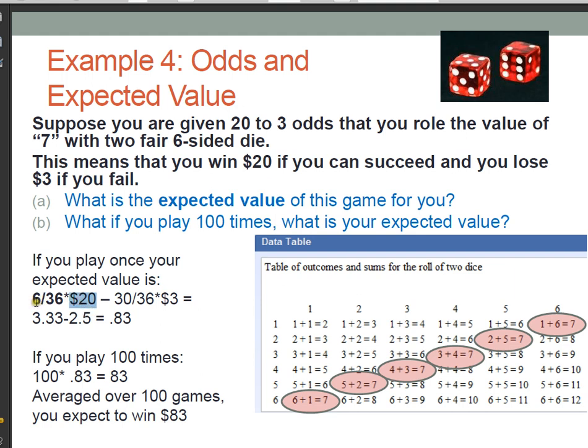6 out of 36 times, I'm going to win $20. That also means that the other 30 times out of 36, I'm going to lose $3. That's why there's a minus sign here. So my expected value is the probability of winning, that's 6 out of 36, times how much I make if I win, that's $20, minus the probability of losing, that's 30 out of 36, times how much I have to pay if I lose.